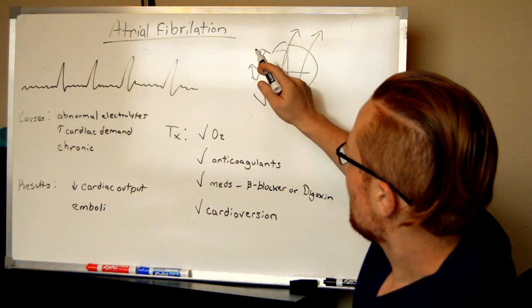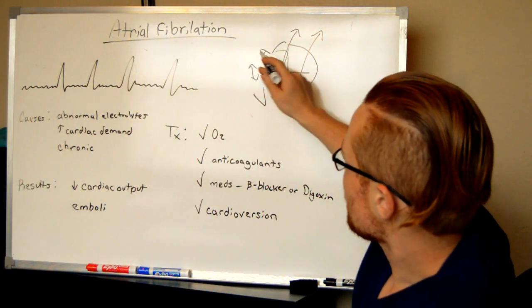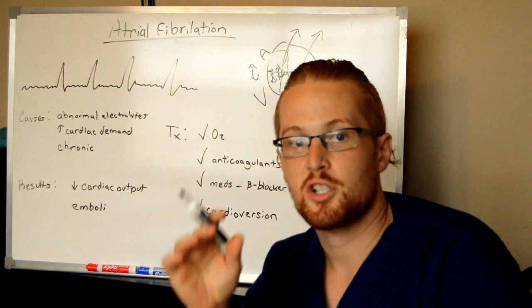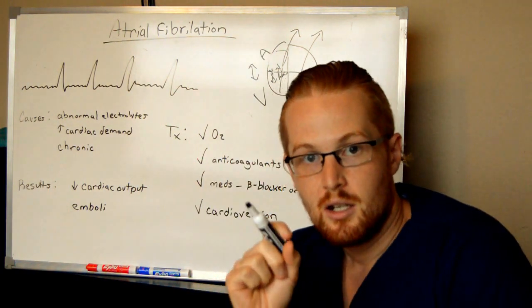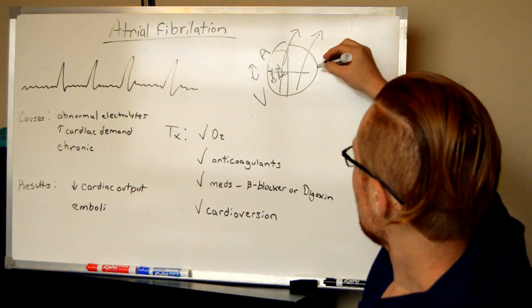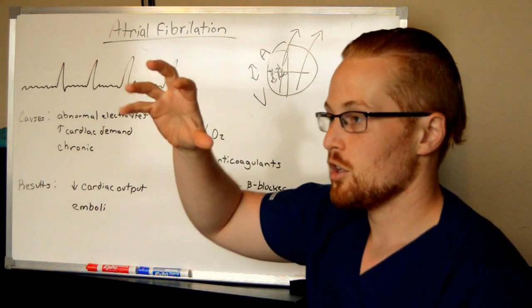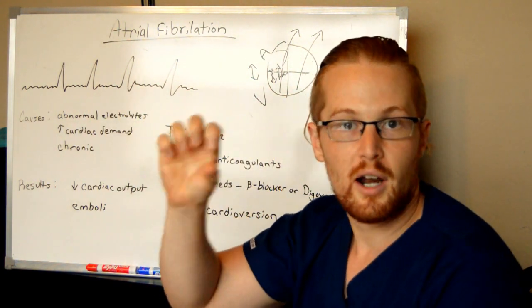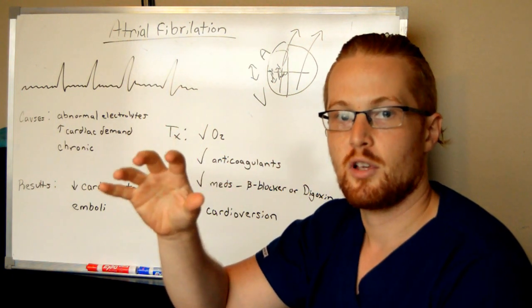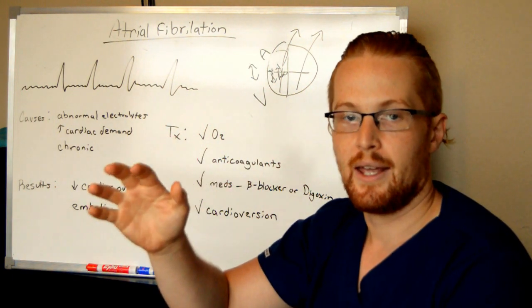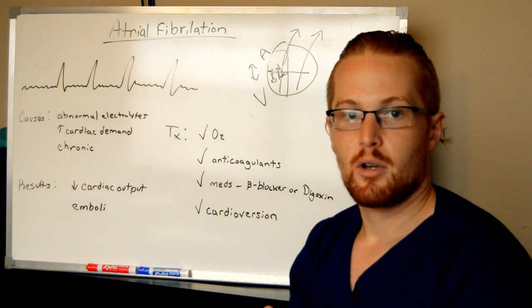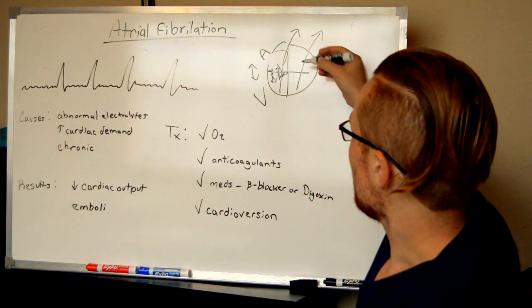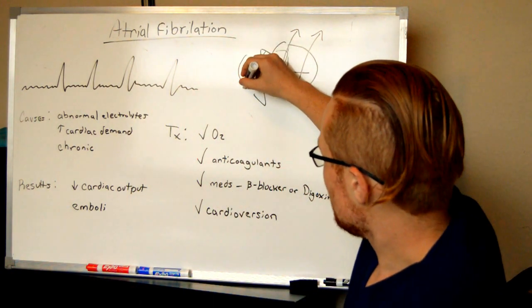Now, the atrial fibrillation refers to them beating so fast that they're not so much contracting, but at this point, they're just quivering. And so instead of just a bunch of fast squeezes that are at a bad time, they may get to the point where they're just fibrillating. And at this point, there's little to no movement of blood from the atrium into the ventricles.